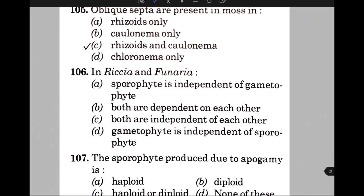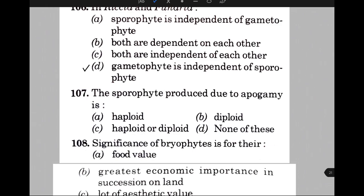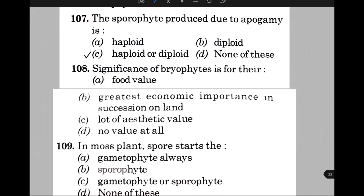The sporophyte produced due to apogamy is — the answer is option C, that is haploid or diploid. The significance of bryophytes is for their — the answer is B, that is greatest economic importance in succession on lands. In the moss plant, a spore starts the — the answer is option A, that is gametophyte.